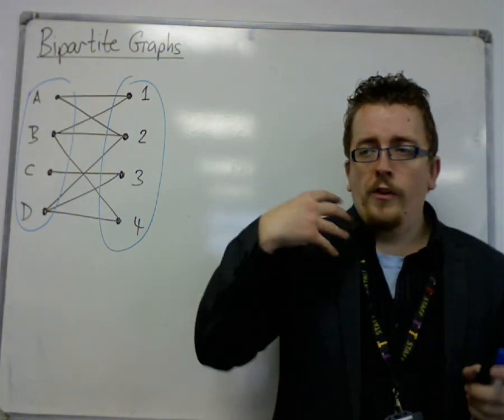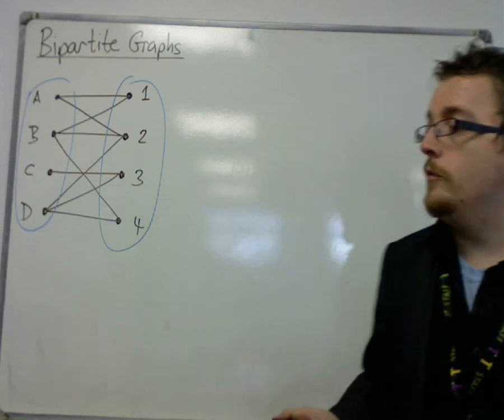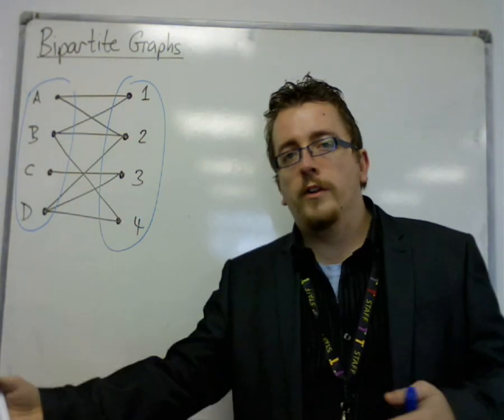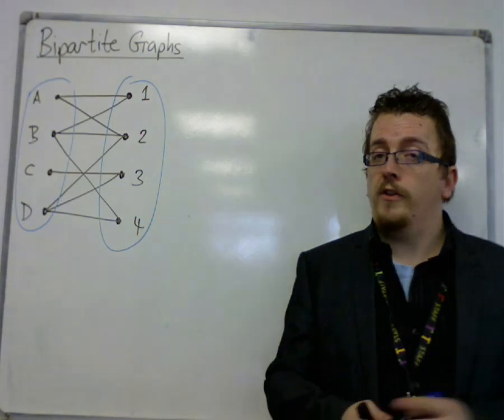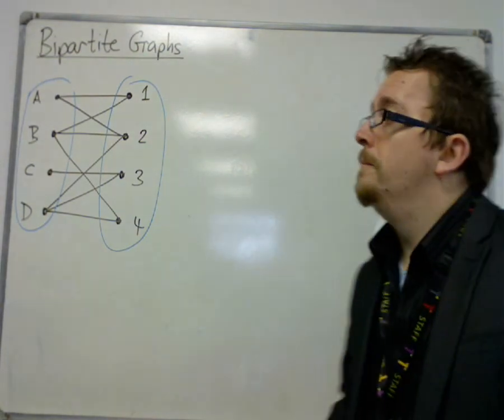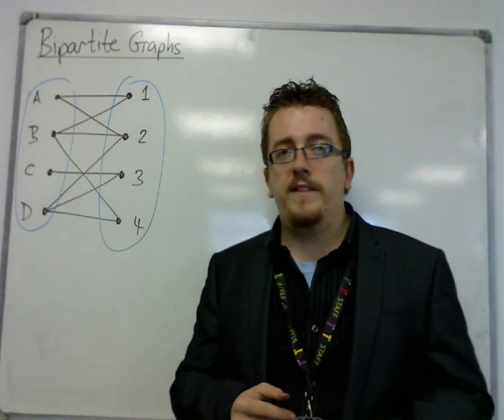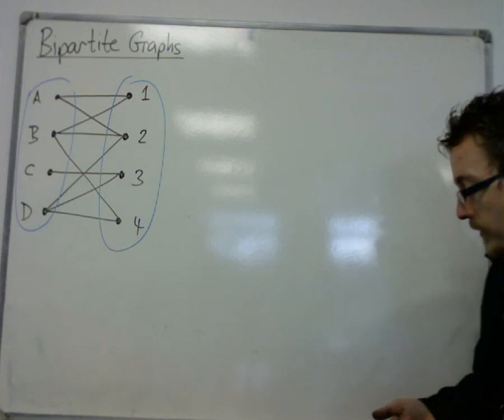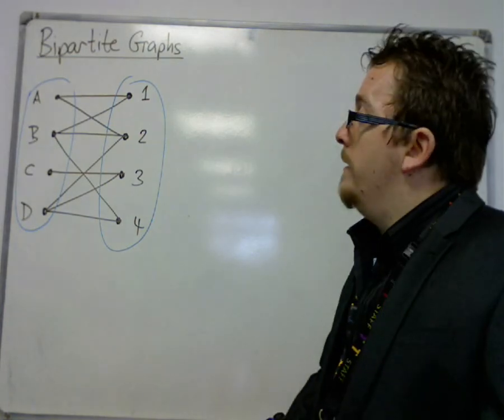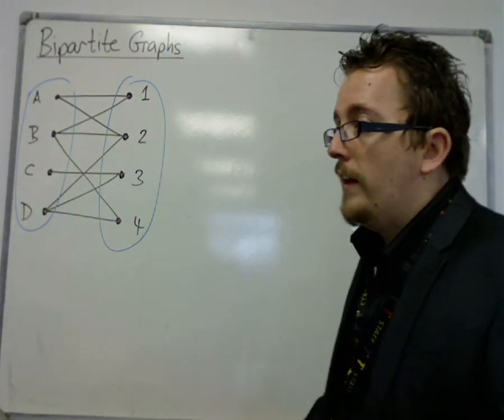The situations where bipartite graphs can be brought up or where they are used is in best allocating a set of workers to a set of jobs, for example. So A, B, C and D might be workers or skilled laborers. And 1, 2, 3 and 4 might be four tasks that need to be completed. Maybe it might be in redecorating a room or something like that, and there are four jobs that need to be done. This could be laying carpet or painting or anything like that.